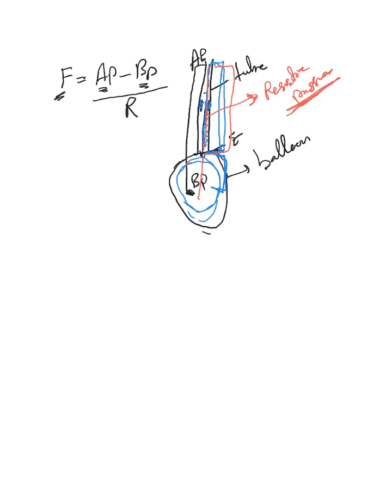Pressure. So the pressure at A, first of all, has to overcome the resistive pressure. Let's call it RP, and this is just to overcome the resistance in the tube.